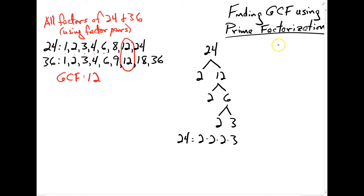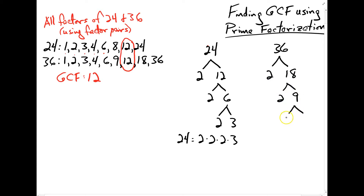Then I find the prime factorization of 36 using factor trees. How about 2 times 18, 2 times 9, 3 times 3. And here's my prime factorization of 36: 2 times 2 times 3 times 3.